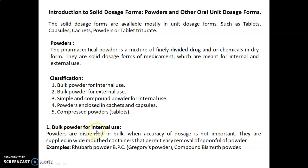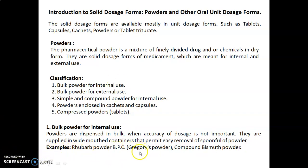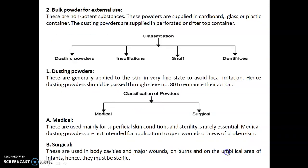First, we will discuss bulk powder for internal use. Powders are dispensed in bulk when accuracy of dosage is not important. They are supplied in wide-mouth containers that permit easy removal of a spoonful of powder. Examples of bulk powder for internal use are rhubarb powder BPC, also known as Gregory's powder, and compound bismuth powder.